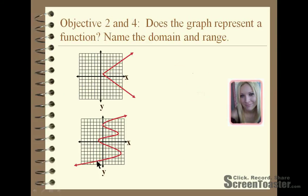For the next two, the graph at the top here would not pass the vertical line test. Any vertical line you put through the graph would cross at two points. As you can see right here, the point (3, 2) right here and (3, -1) right here would share the same x value. Therefore, every coordinate wouldn't have a unique x value.